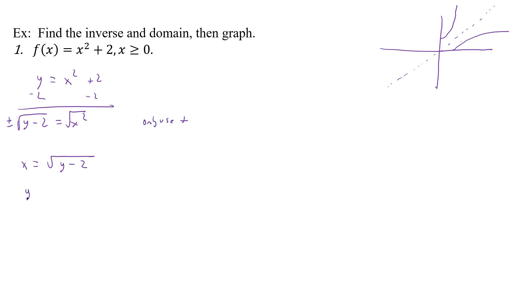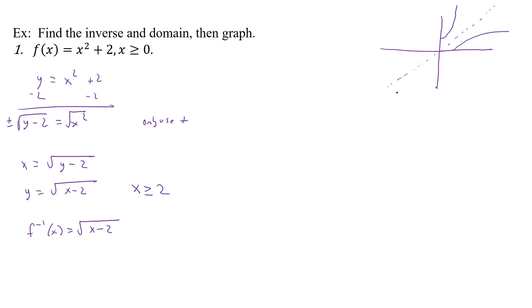We'll switch our x and y's. Here, x has to be greater than or equal to two, or we're going to have negative values under the square root, and we don't want that. So that's our domain. And so f inverse of x is going to be equal to the square root of x minus two, and that should be what that graph is.